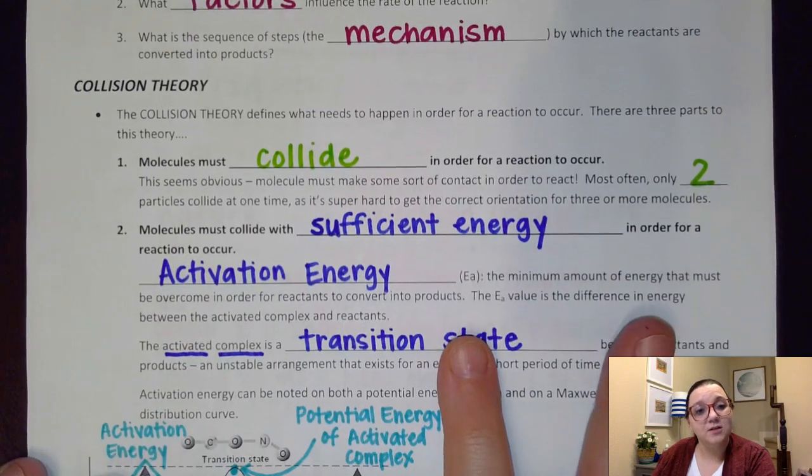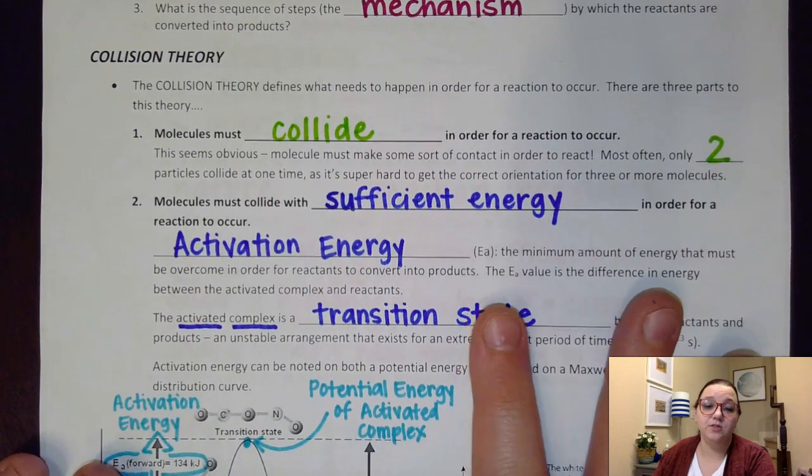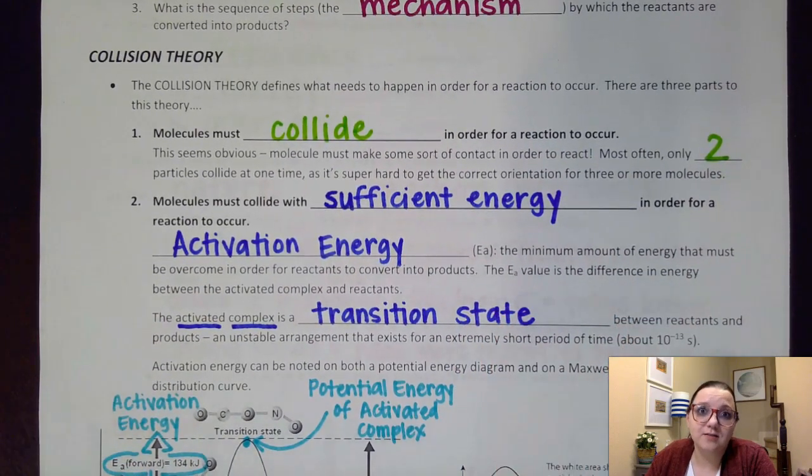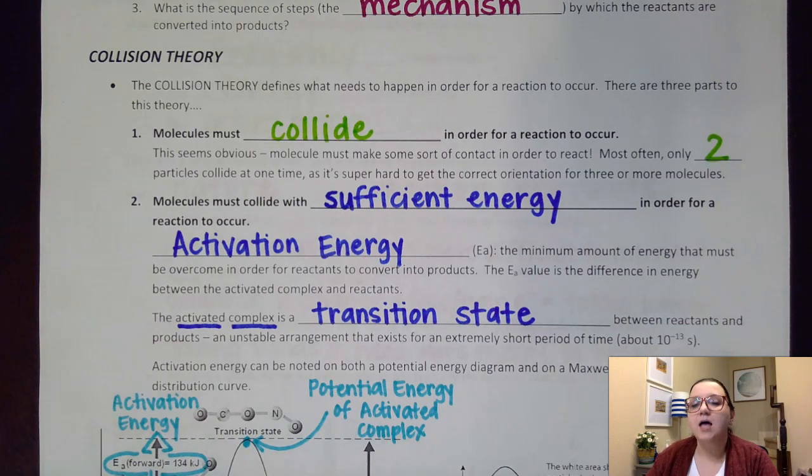For right now what we're first going to talk about is what is called the collision theory. The collision theory addresses what has to happen in order for a reaction to take place in the first place, and there's three statements to this theory.